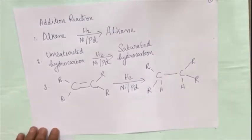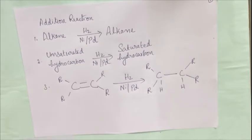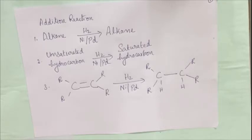These are three ways we can show the general reaction of addition reaction. Once again, addition reaction is nothing but the conversion of an unsaturated hydrocarbon to a saturated hydrocarbon by the addition of molecules — like hydrogen or halogen — across the double bond, in the presence of a substance like nickel or palladium as the catalyst.